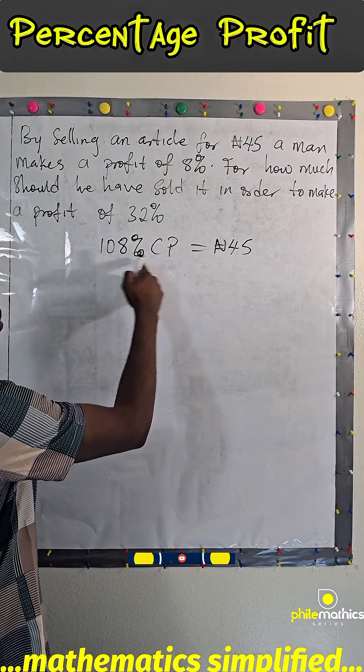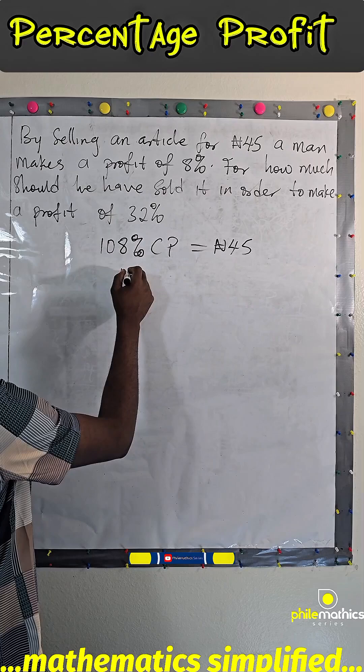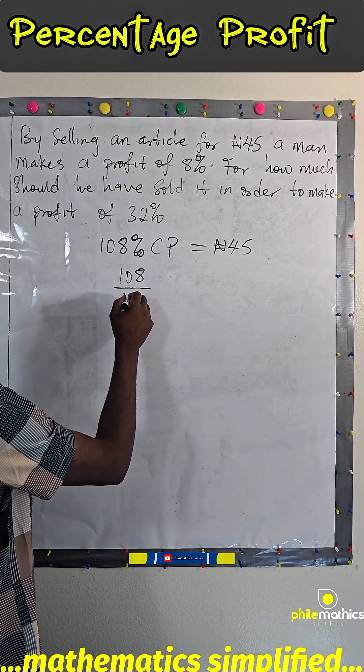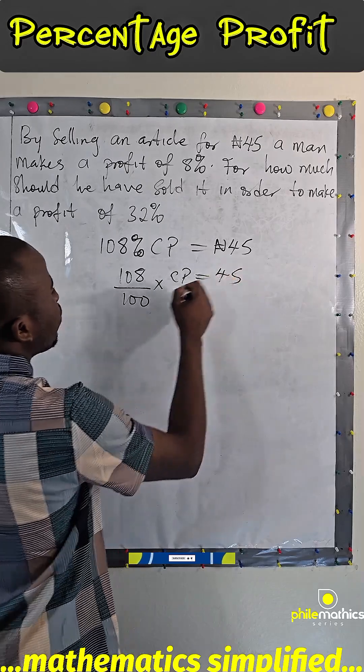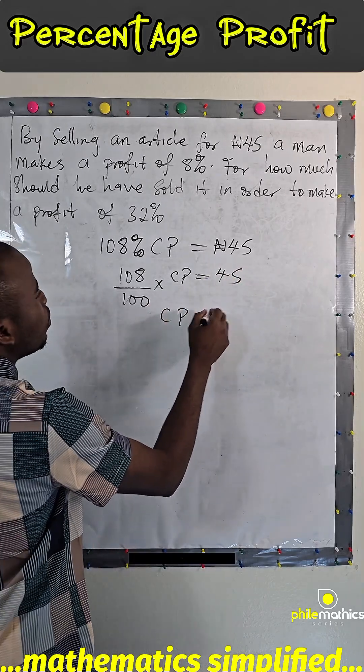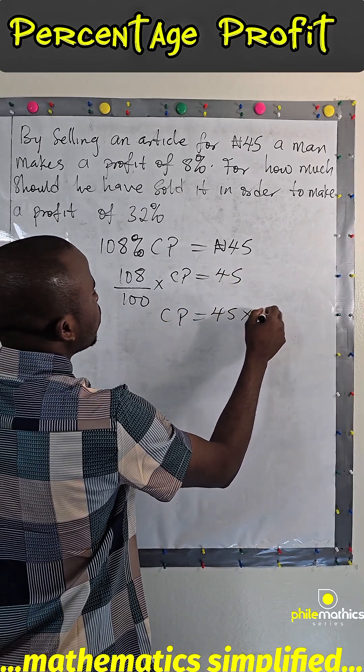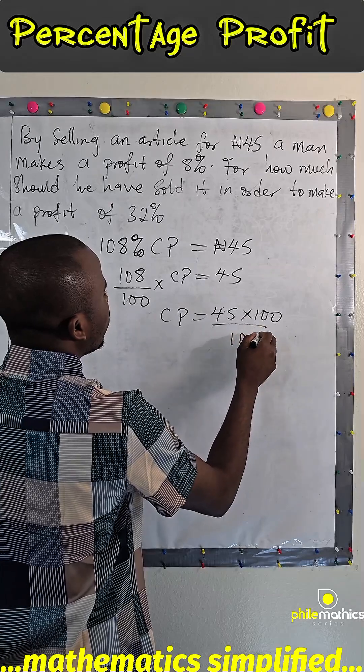And so, to find the cost price, 108% of this is 108 over 100 times CP equals to 45. And the cost price will be 45 times 100 over 108.